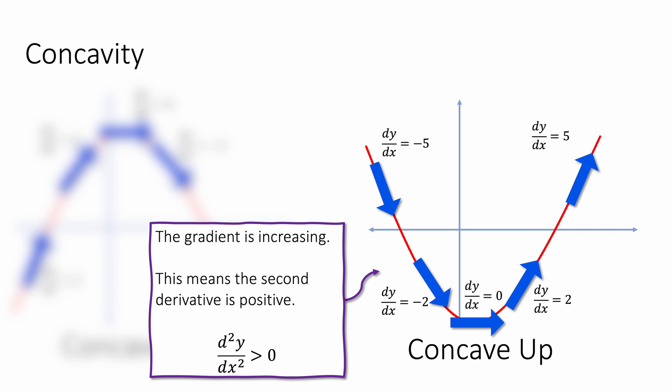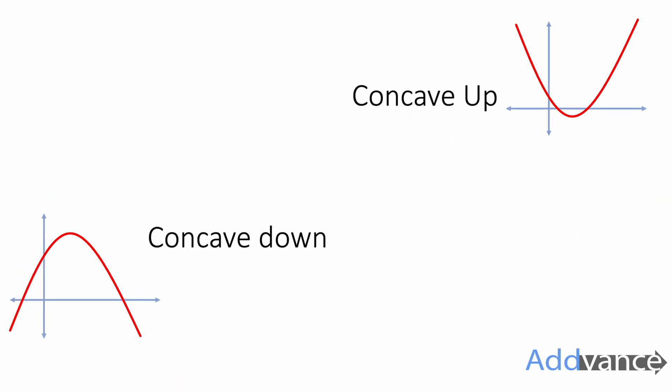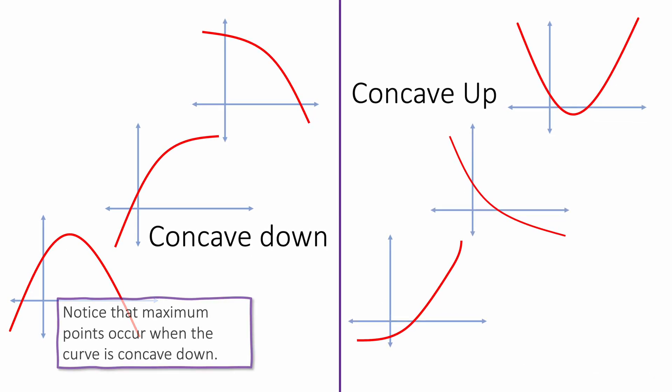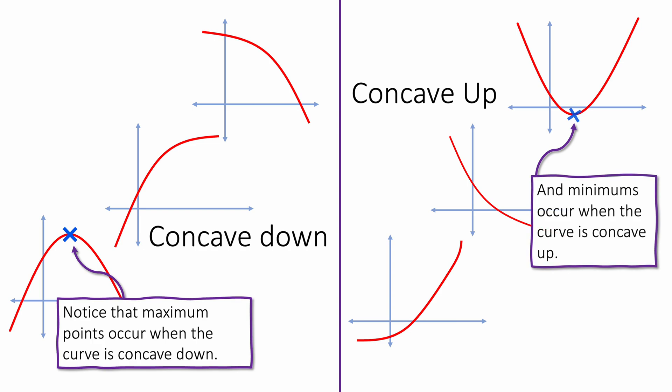Notice the symbol we use for the second derivative: d squared y over dx squared. The square is in the middle at the top but on the end at the bottom — it's a bit of a weird symbol, but that's how mathematicians write it. We can have concave down, where the curve is bending downwards, or concave up, where the curve is bending upwards. When it's concave down and there's a turning point, it will be a maximum. Whereas if it's concave up, the turning point will be a minimum.